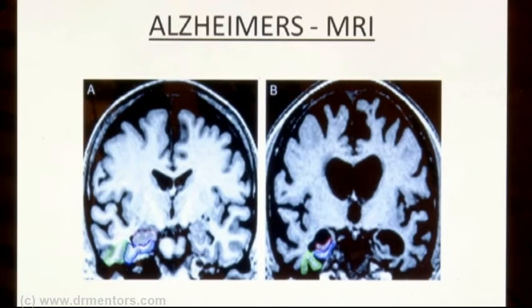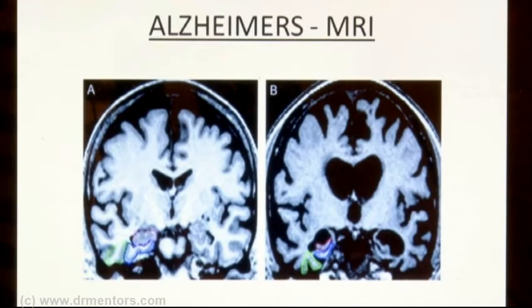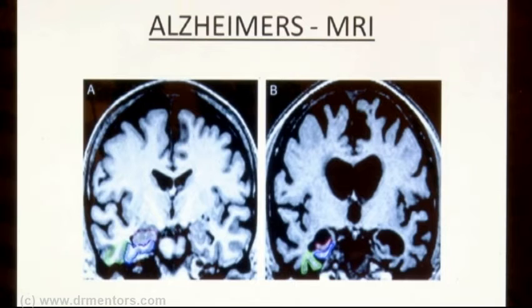You can expect an elderly male or female patient coming to you with forgetfulness and a dementia component, with the corresponding MRI. We describe this image as generalized atrophy, predominantly of the temporal and parietal lobe, suggestive of Alzheimer's disease.